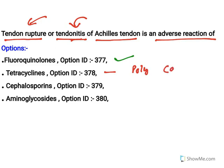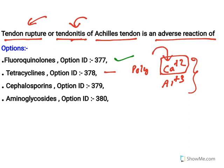Now, tetracyclines can chelate with polyvalent cations like calcium and aluminium, and this combination may result in complex formation. Calcium is present in our bones and teeth, so tetracyclines may cause adverse effects related to these complexes — enamel development will be impaired and bone growth may be reduced. That is why tetracyclines should not be given to young children.